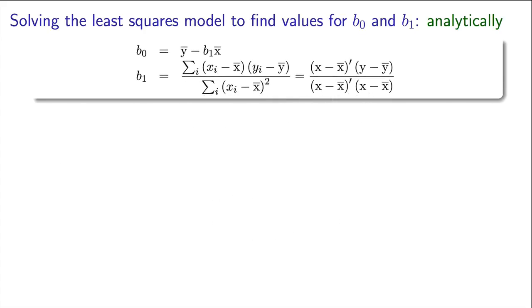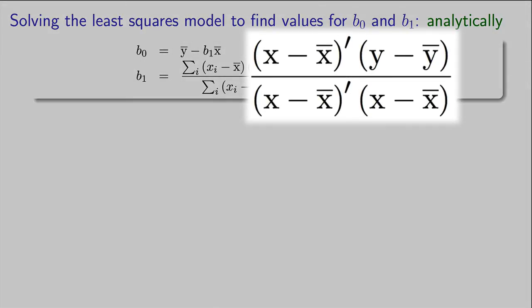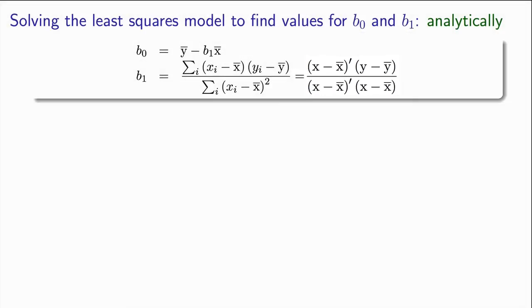We can also write these summations in matrix form to be a bit more compact. The matrix form for estimate b1 can be written as x minus x-bar transpose times y minus y-bar, and in the denominator, we have x minus x-bar transpose times x minus x-bar. We will also come back to the matrix form in a few videos from now.